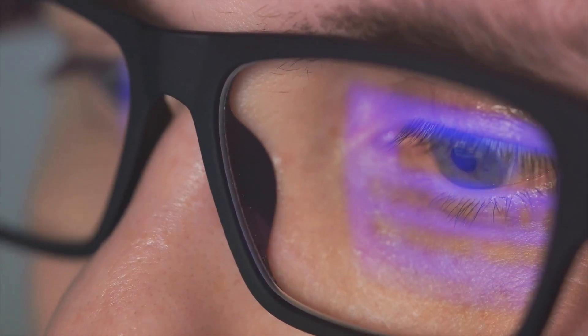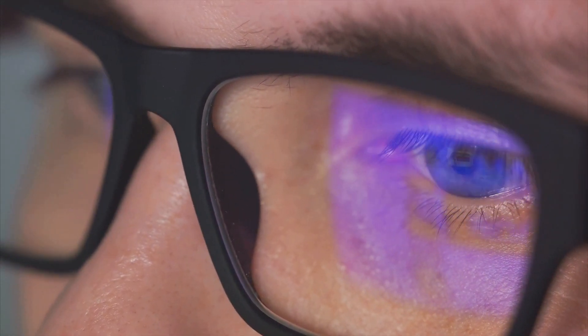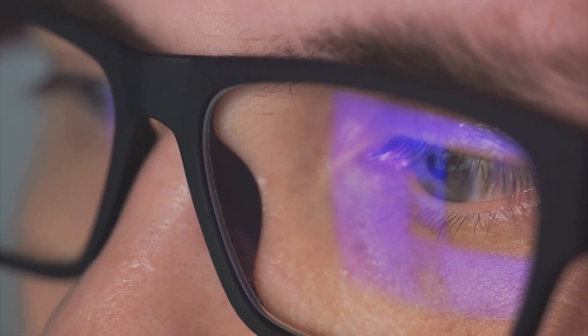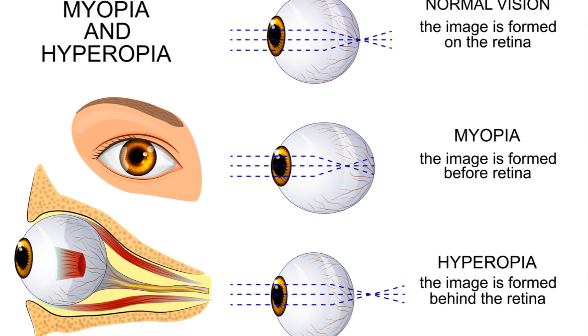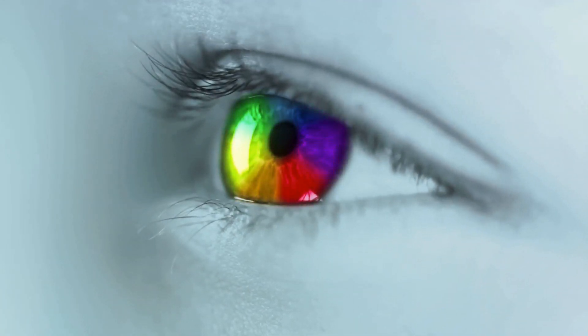Humans typically have three types of cones that are sensitive to short, medium, and long wavelengths, roughly corresponding to blue, green, and red light. Each cone sends a signal depending on how much of its particular light wavelength it receives and how bright the light is.